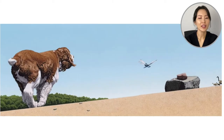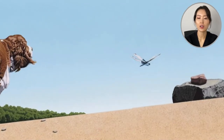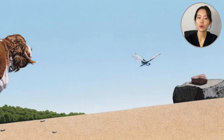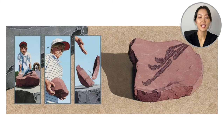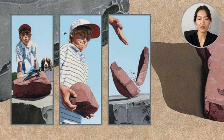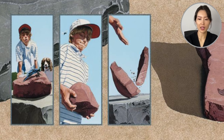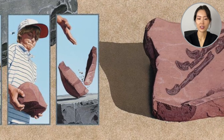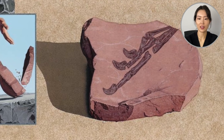The dragonfly flies toward a reddish stone and sits on it. It's a heavy one. The boy lifts it up and drops it down. It cracks in half — and what could this be? What do you suspect? They look like claws.